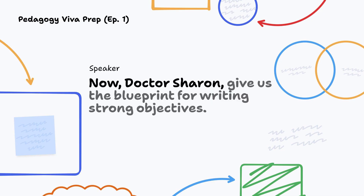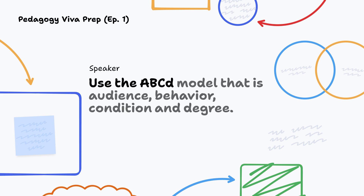Give us the blueprint for writing strong objectives. Use the ABCD model — that is, Audience, Behavior, Condition and Degree.